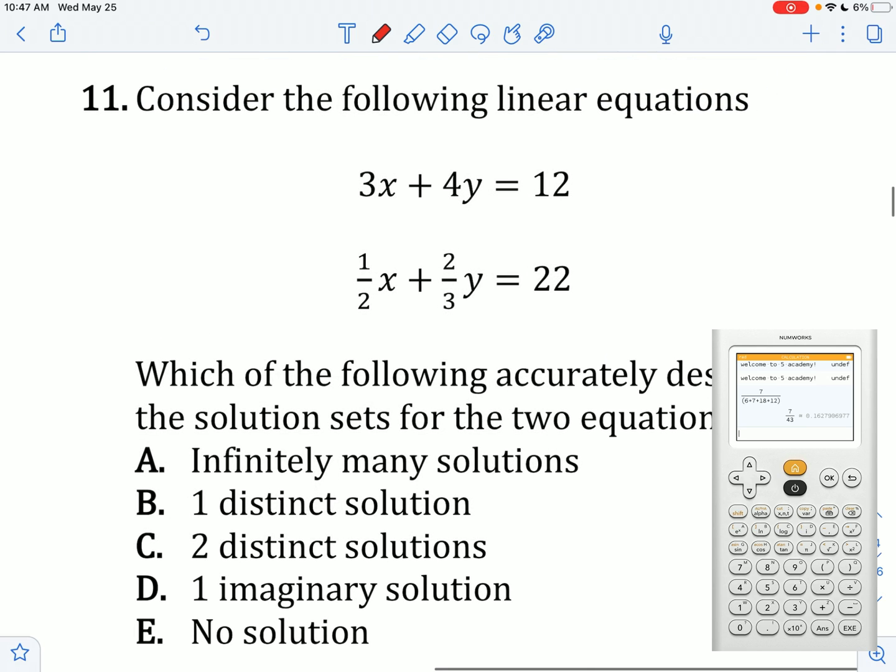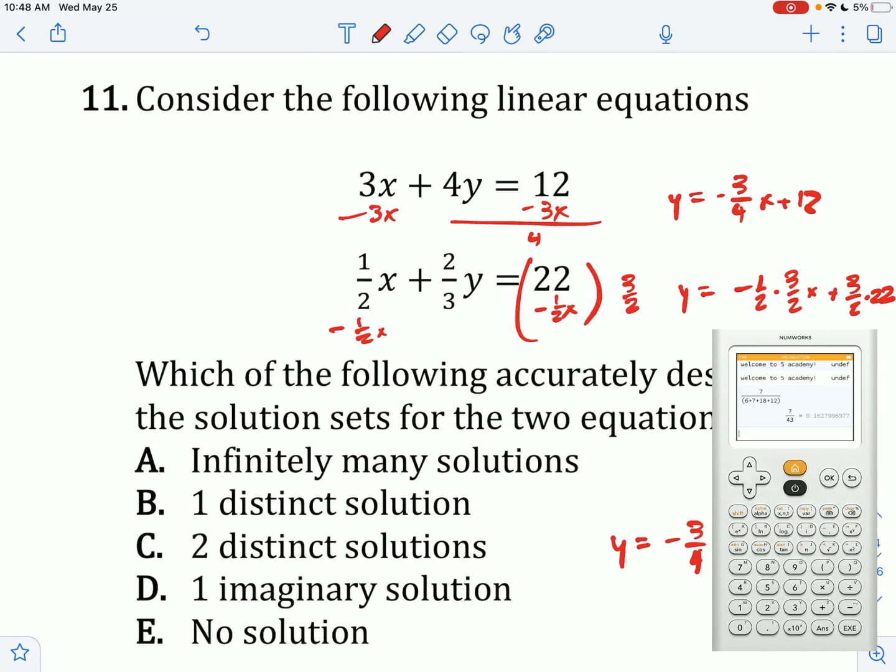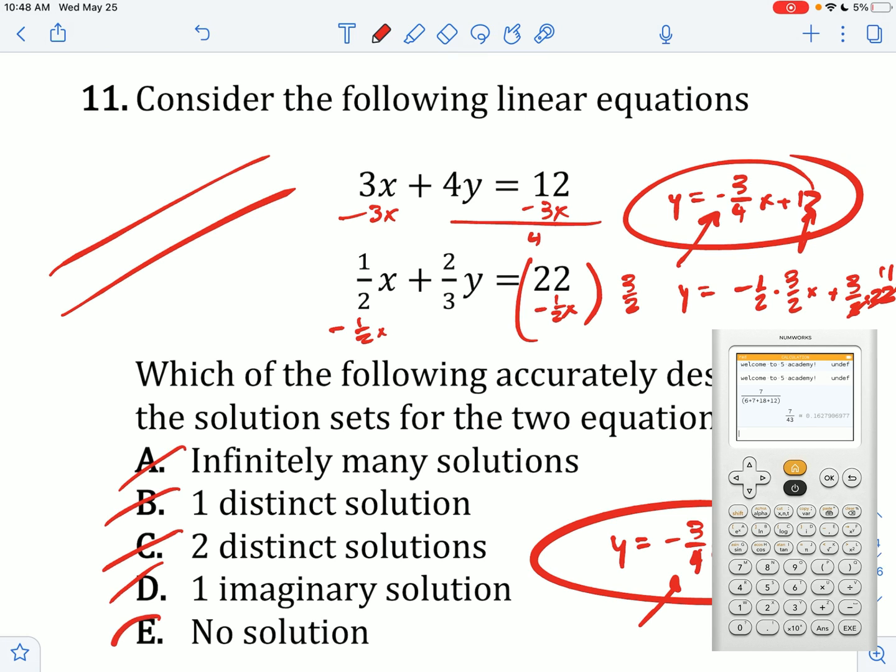Considering the following linear equations, which of the following accurately describes the solution sets? I can convert both of them to y equals mx plus b. Divide this all by 4. We get y equals negative 3 over 4x plus 12. This one, I subtract half x on both sides, then multiply everything by 3 over 2. I end up getting y equals negative 3 over 4x plus 33. These are the two lines. They have the same slope, so they're parallel. But they have different y-intercepts, so they never will intersect. They have no solution.